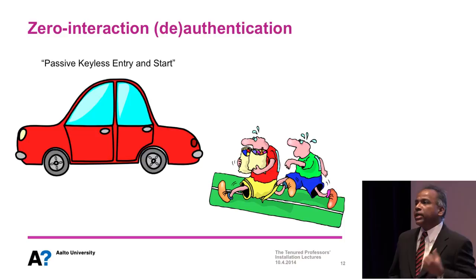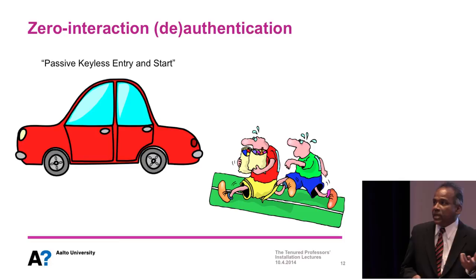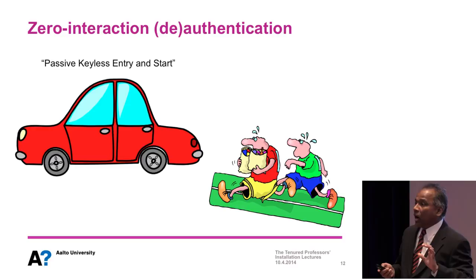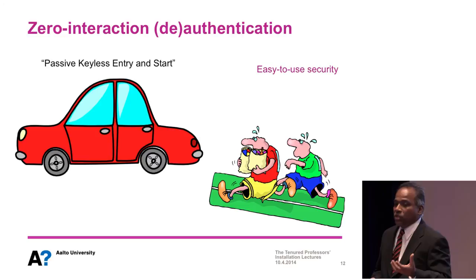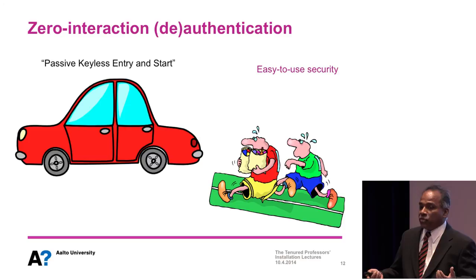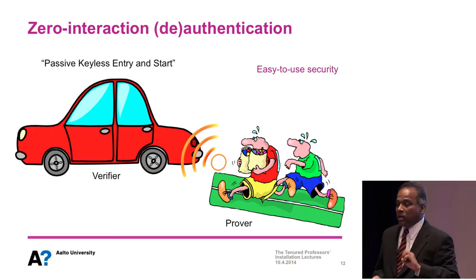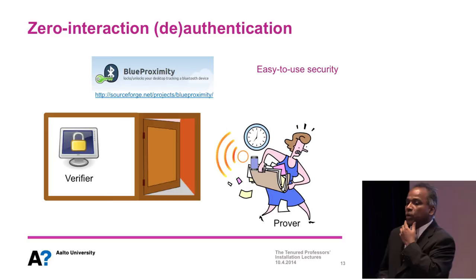Let me give another example: zero interaction authentication. Systems like passive keyless entry and start — which you can buy for cars today — allow your car to detect the presence of your car key nearby and unlock without you having to do anything. This is an example of making a security system easy to use. If you've rushed to your car with hands full of groceries and kids in tow, you know the value of opening the car without doing anything. In any zero interaction system, there's a verifier (the car) and a prover (the key), and the verifier senses the prover's presence using a local channel like Bluetooth.